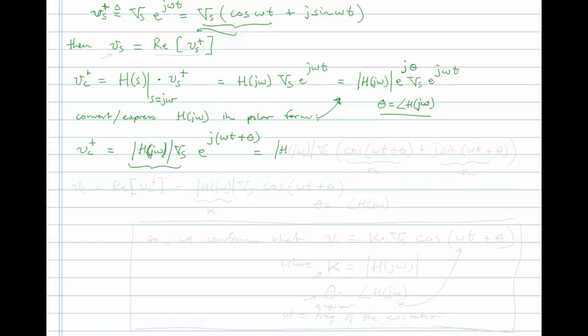And now I'm going to use Euler's formula to write cosine omega t plus theta plus j sine omega t plus theta. And I can now see that this is the real part. This is the imaginary part. And we said that the response across the capacitor Vc is actually just the real part of this complex response Vc plus, just as the real excitation Vs here was equal to just the real part of the complex excitation.